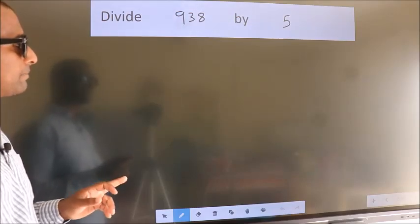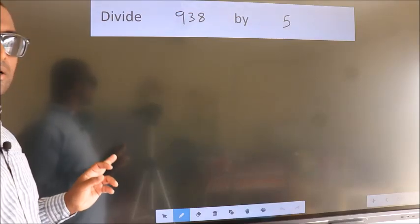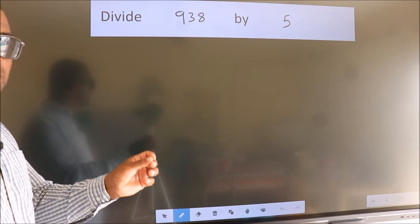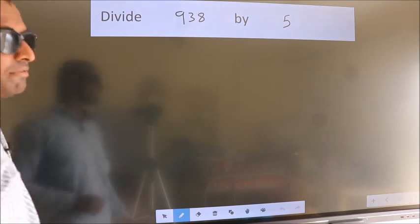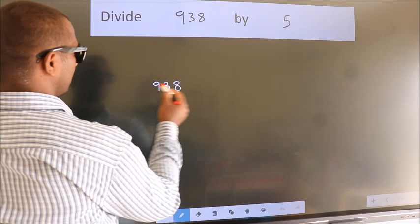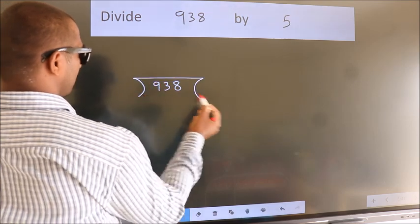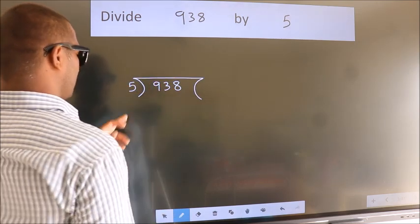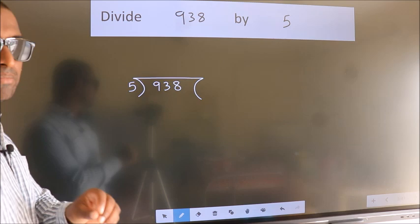Divide 938 by 5. To do this division, we should frame it in this way. 938 here, 5 here. This is your step 1.